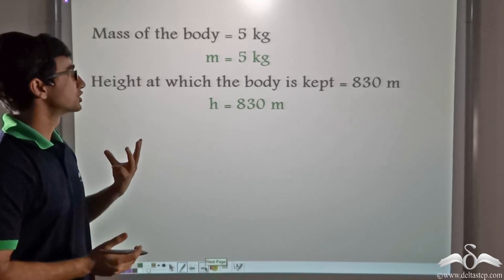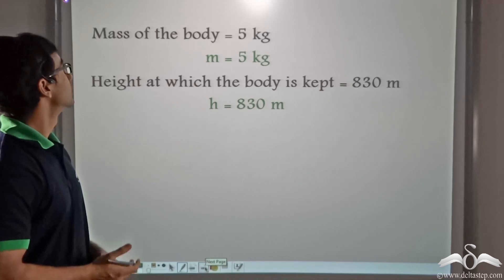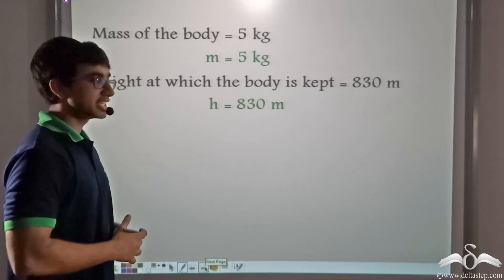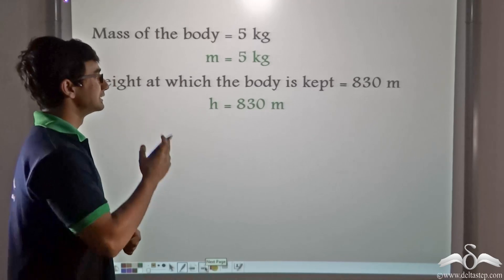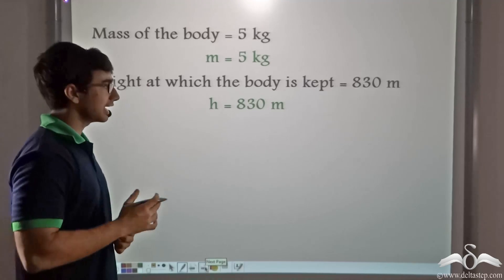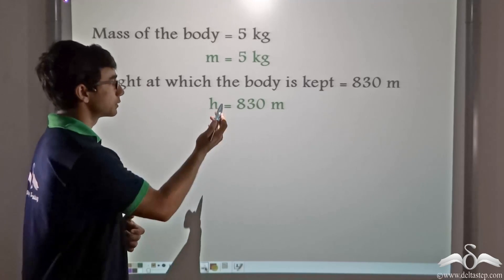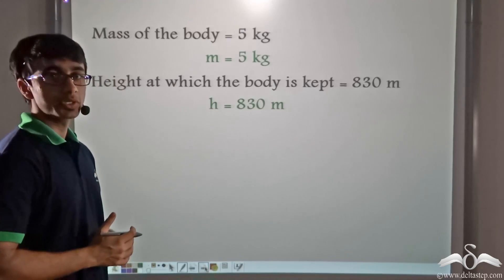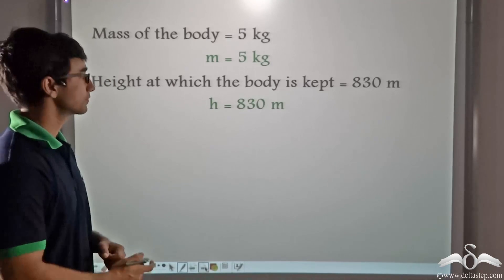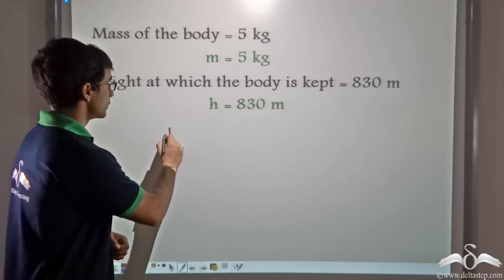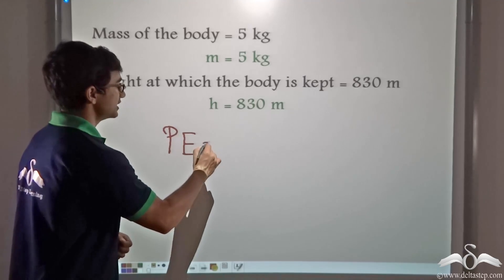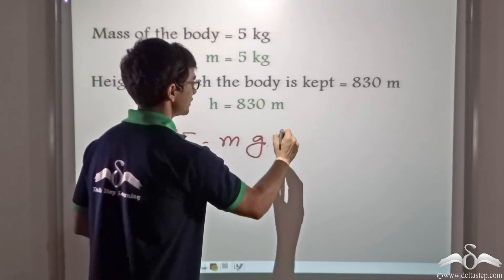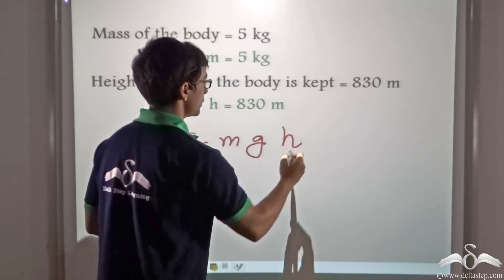We have been given three things: mass of the body m = 5 kg, the height at which the body is kept h = 830 meters, and g = 10 m/s². We know the formula of potential energy is m × g × h.